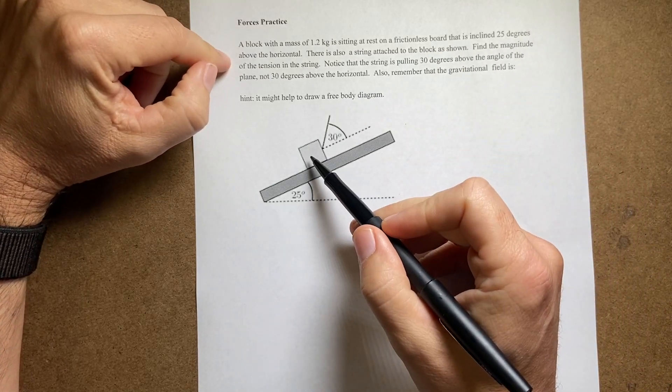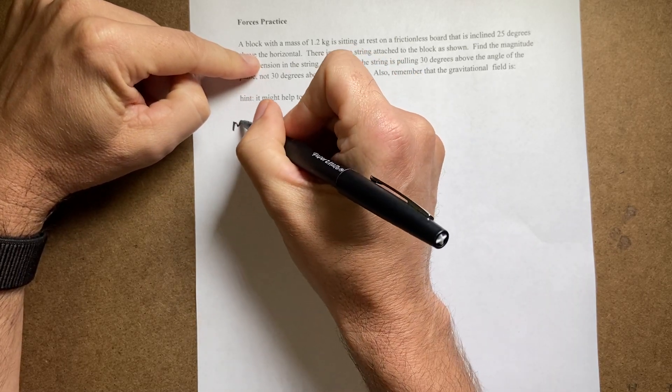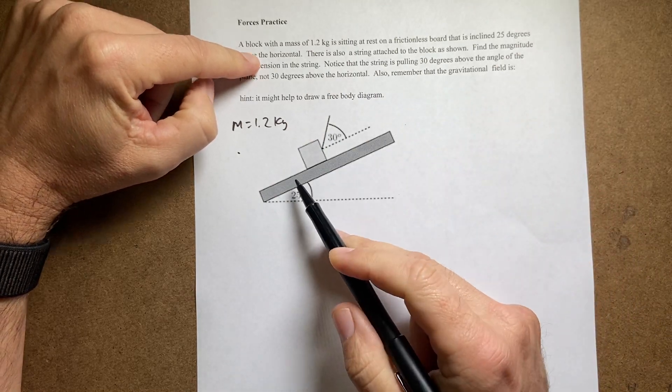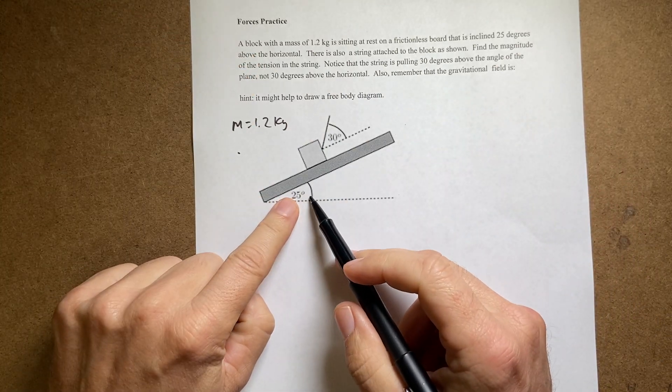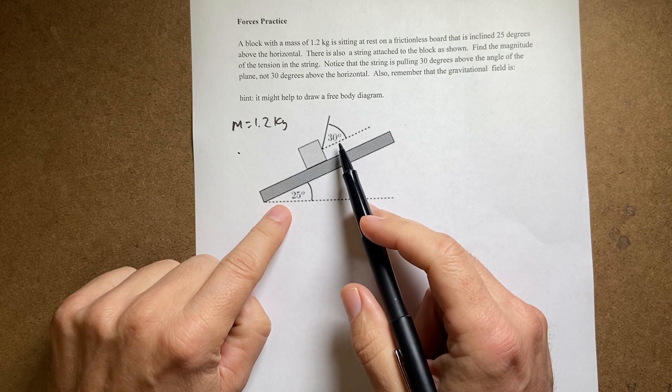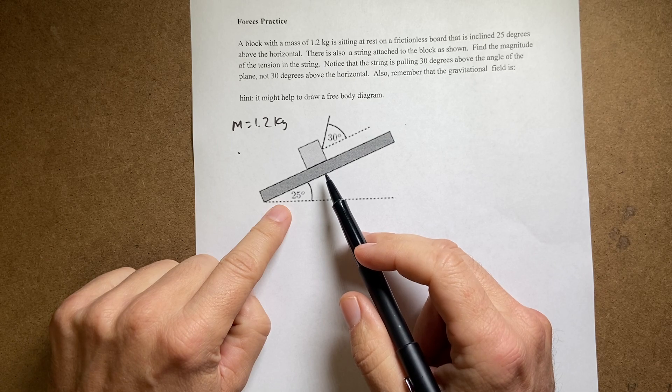So I have a block with a 1.2 kilogram mass, so let's put that right there, m equals 1.2 kilograms, on a frictionless board that's inclined 25 degrees above the horizontal and there's a string holding it up and that's 30 degrees above the board. So the question is what's the tension in the string?